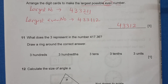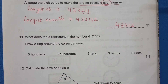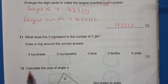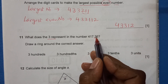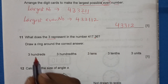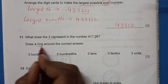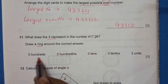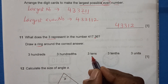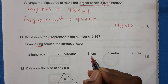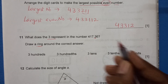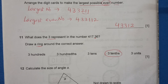Question 11: What does the digit 3 represent in this number? The 3 is after the decimal point, in the tenths place. Draw a ring around the correct answer — three tenths.